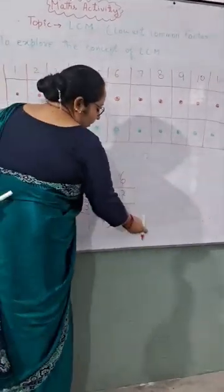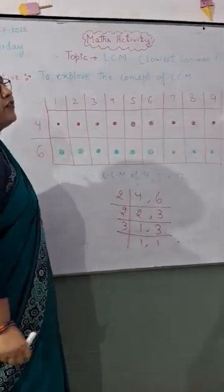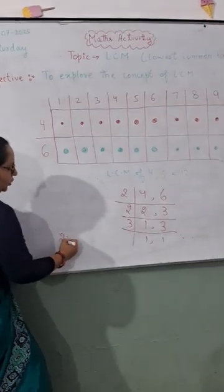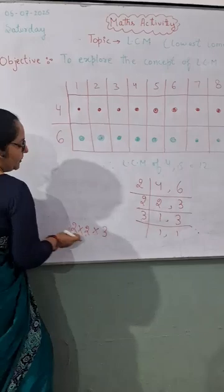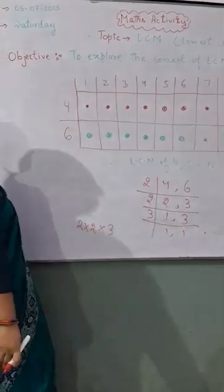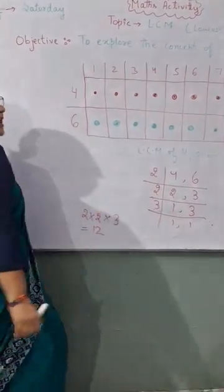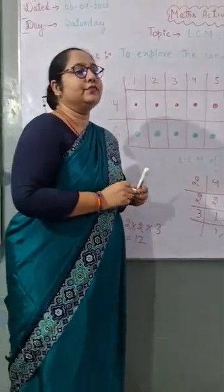Now, you have to bring down the 1 and 1. Then these are your factors. Write down the factors: 2 into 2 into 3. Multiply them. 2 twos are 4, 4 threes are 12. That means 12 is your LCM. Do you understand? Yes, ma'am.